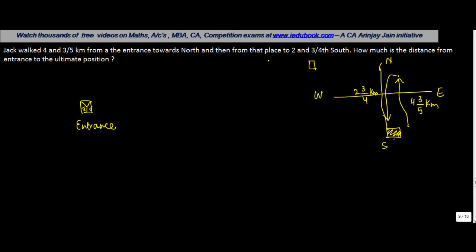How much is the distance from the entrance to the ultimate position? So let's say your entrance is here. You moved this much but you came back this much. So what is the distance from this point until this point? Obviously, it is the difference between what I walked in total from this point to this point less what I came back. So that is going to be 4, 3 upon 5 kilometers less 2, 3 upon 4 kilometers.